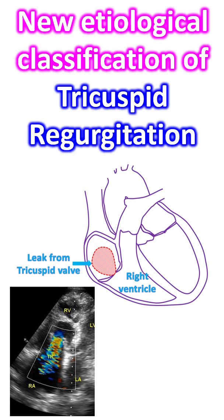Primary TR contributes to only 5-10% and could be degenerative due to prolapse or flail leaflet, congenital as in apical displacement of Ebstein's anomaly, or acquired as in tumours, trauma, carcinoid, rheumatic heart disease, or radiation.